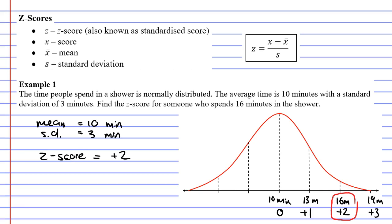Let's do it now using the formula on the top right. If you find this confusing, look to the left at the dot points - it tells you what each letter means. z is our z-score, x is our score. The score is basically the 16 minutes - the time the person spent in the shower.